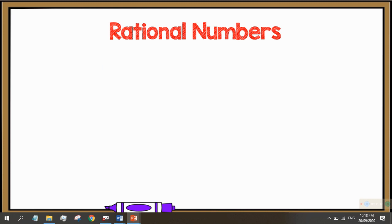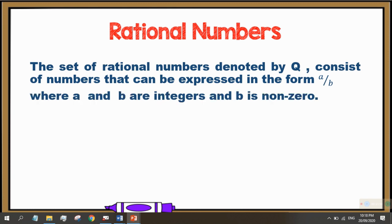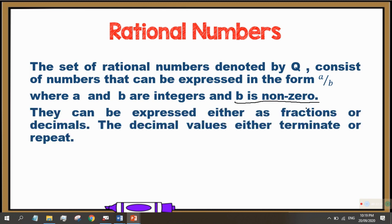Now, let's go to the set of rational numbers. The set of rational numbers is denoted by Q. It consists of numbers that can be expressed in the form A over B, or fractions, where A and B are integers and B is non-zero. You have to remember that B should be non-zero, because division by zero is not allowed. They can be expressed either as fractions or decimals. The decimal values either terminate or repeat. In set builder notation, it is represented by Q equals A over B, such that A and B are both integers and B is non-zero.